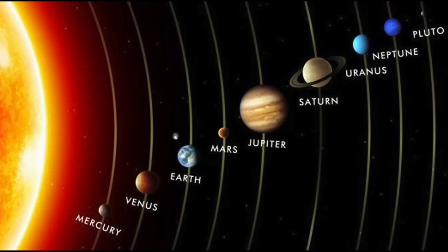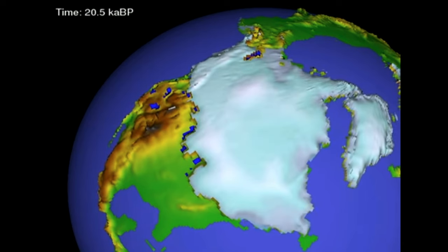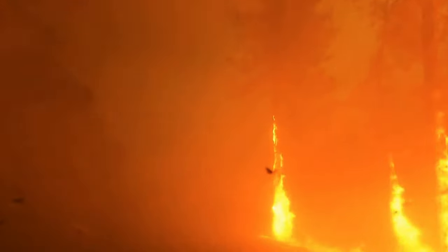Venus on the other hand is so hot despite not being the closest to the sun because of massive amounts of sulfur dioxide in its atmosphere, trapping a lot of heat. Without greenhouse gases, the planet will get too cold but an excess will kill all life as well.